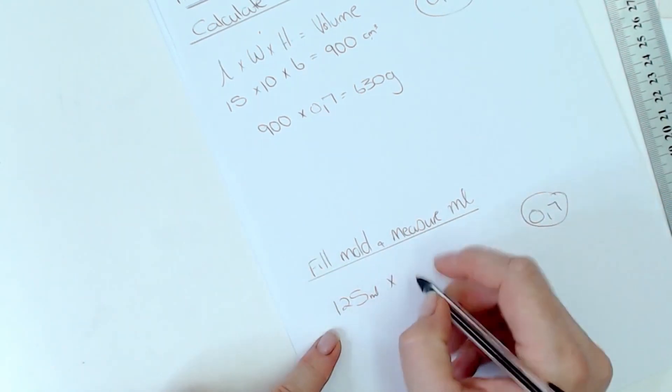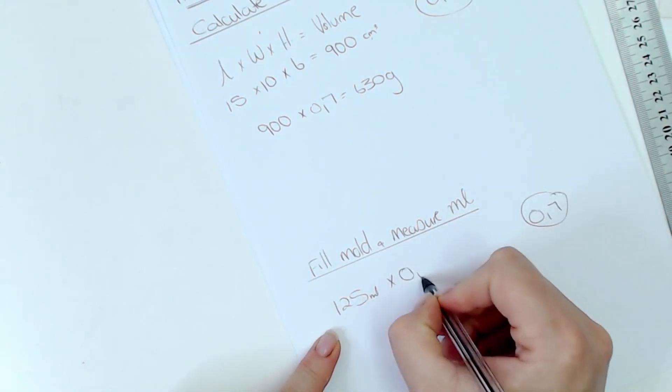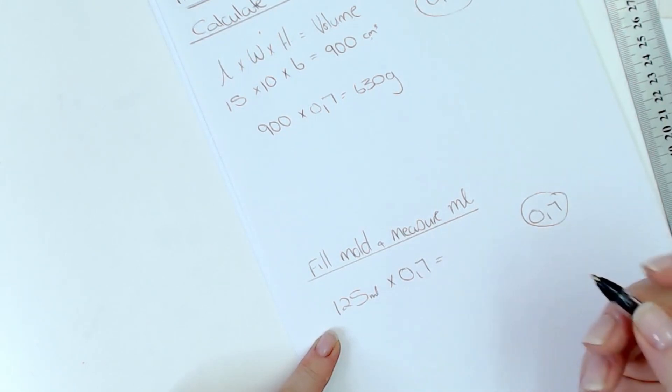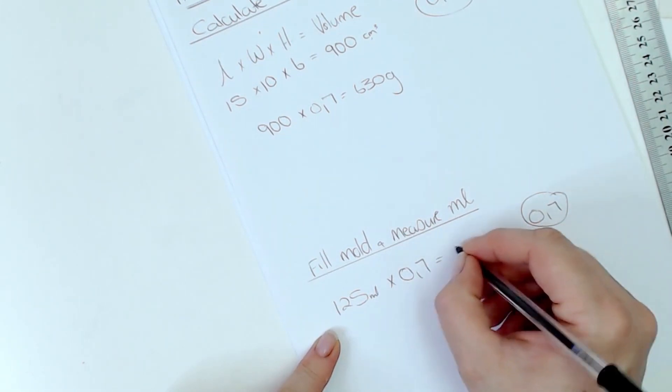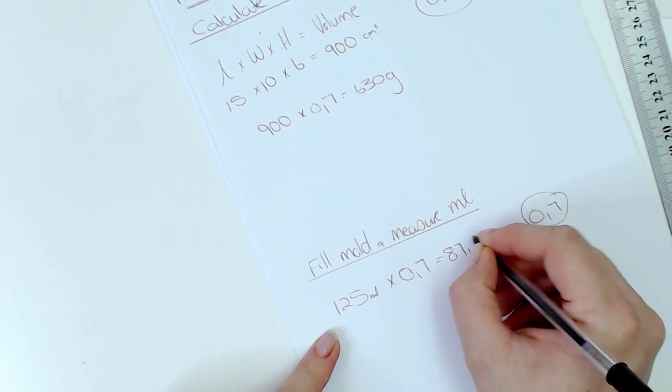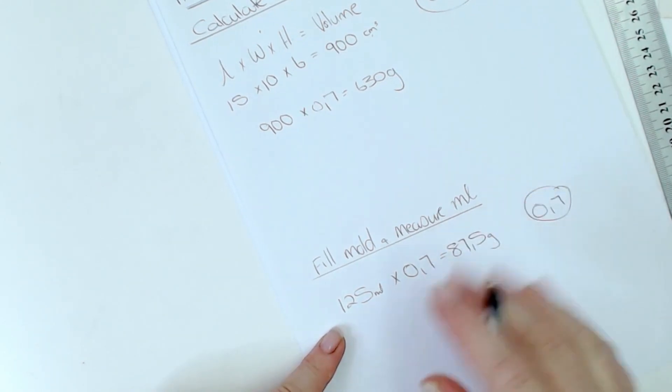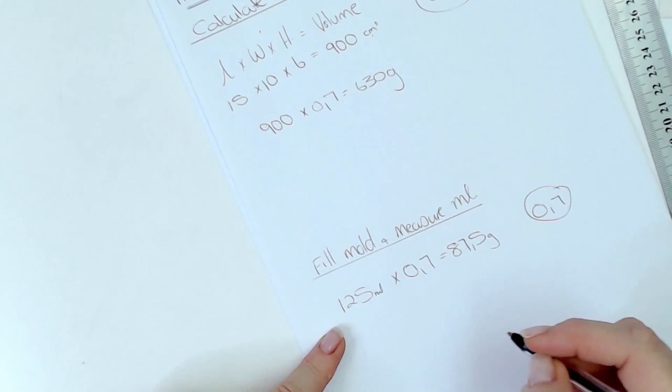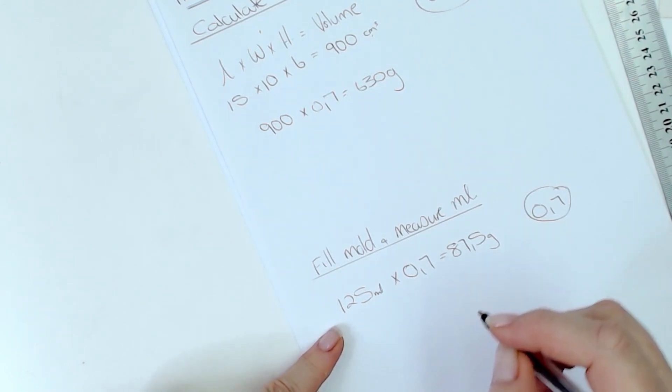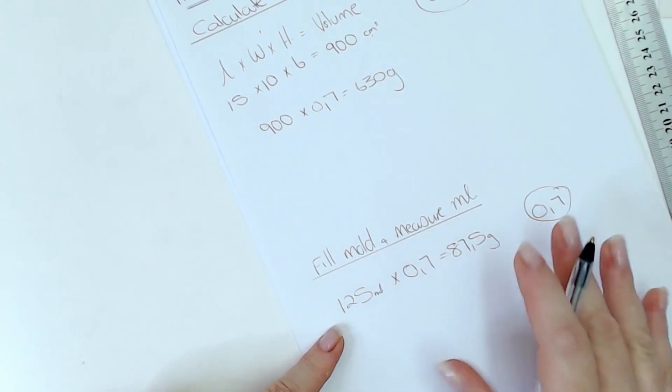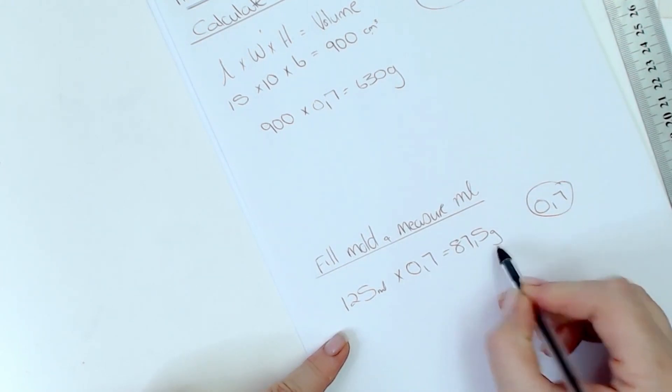So it's 125 times 0.7 and that's going to be equal to 87.5. I'm not that clever, I'm not working this out in my head, I just pre-calculated everything. That's just much faster than me struggling with my calculator here. So then you've got it in grams for one of these little cavities.